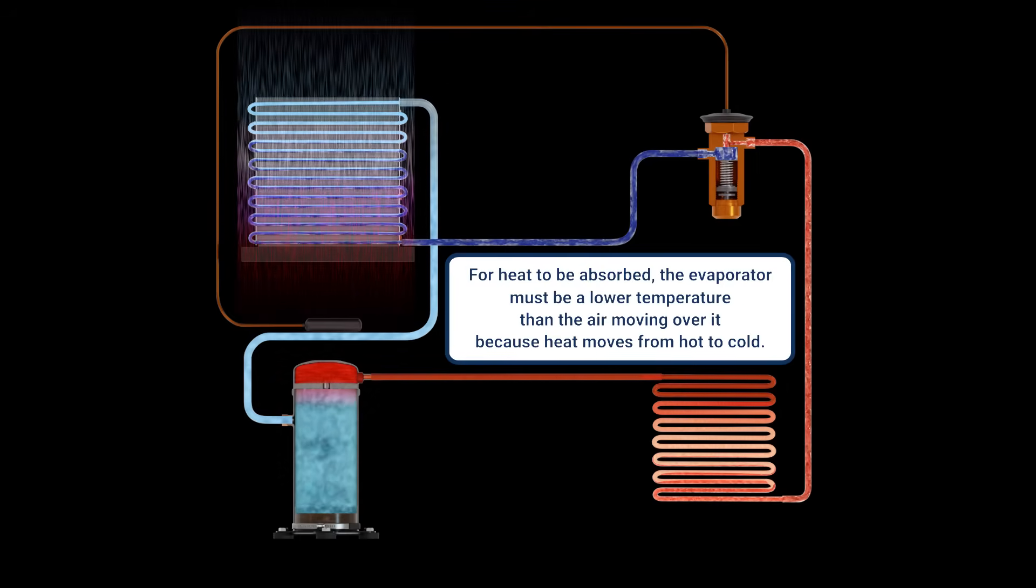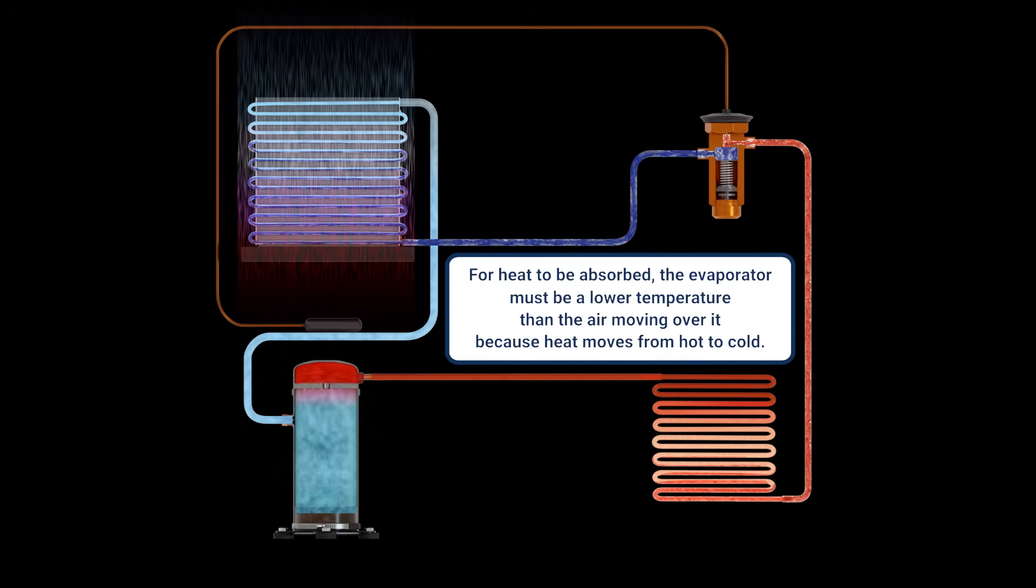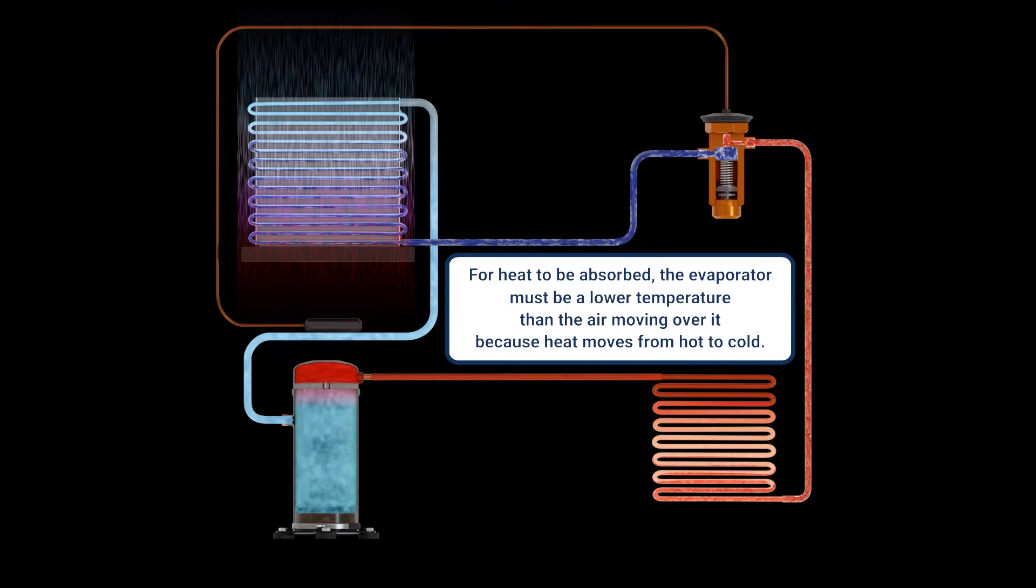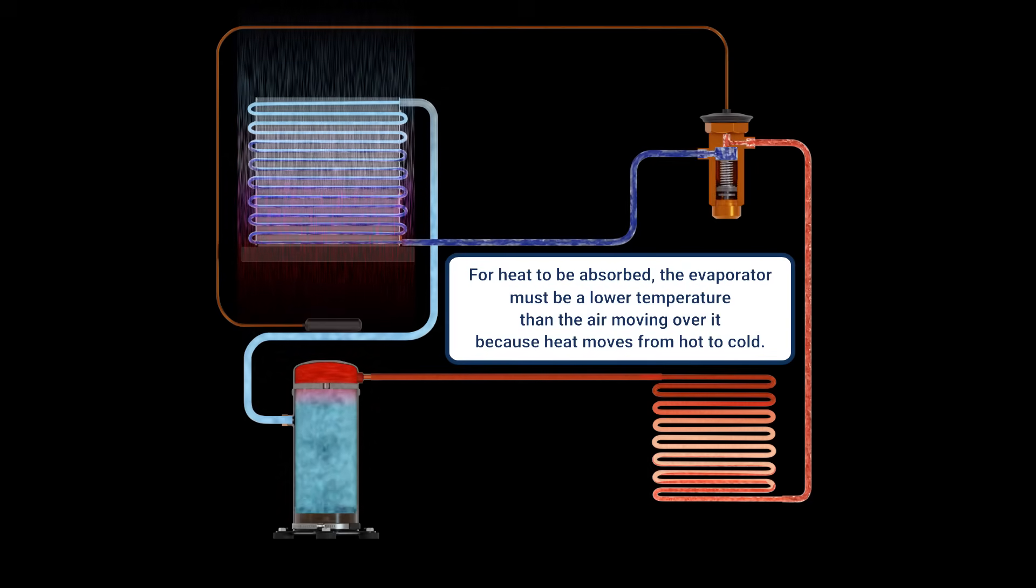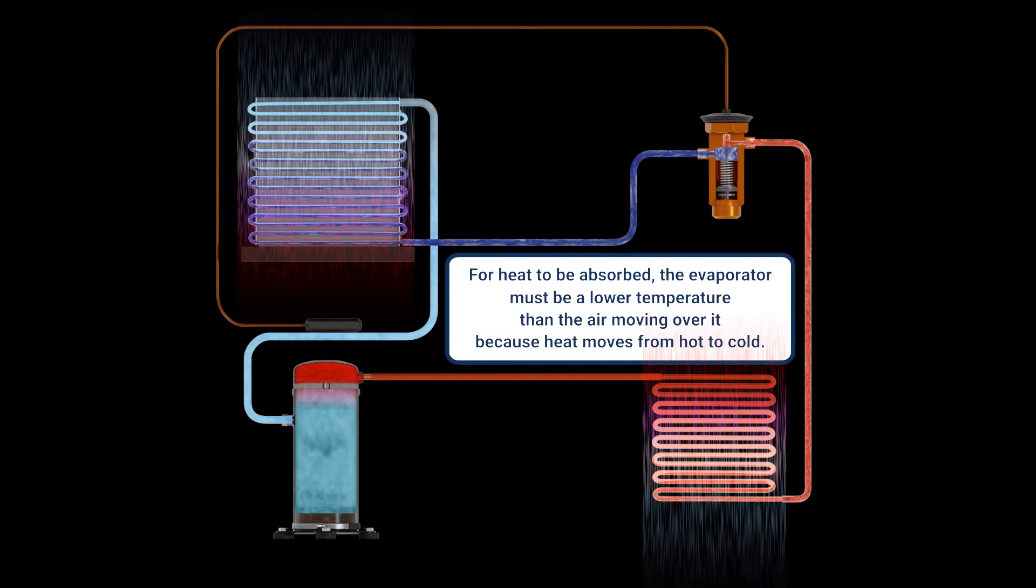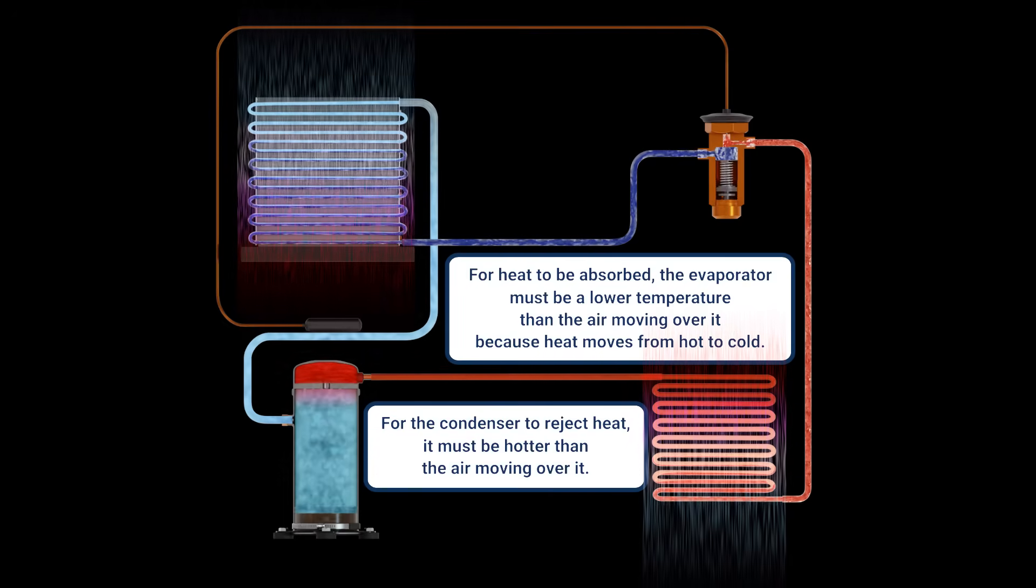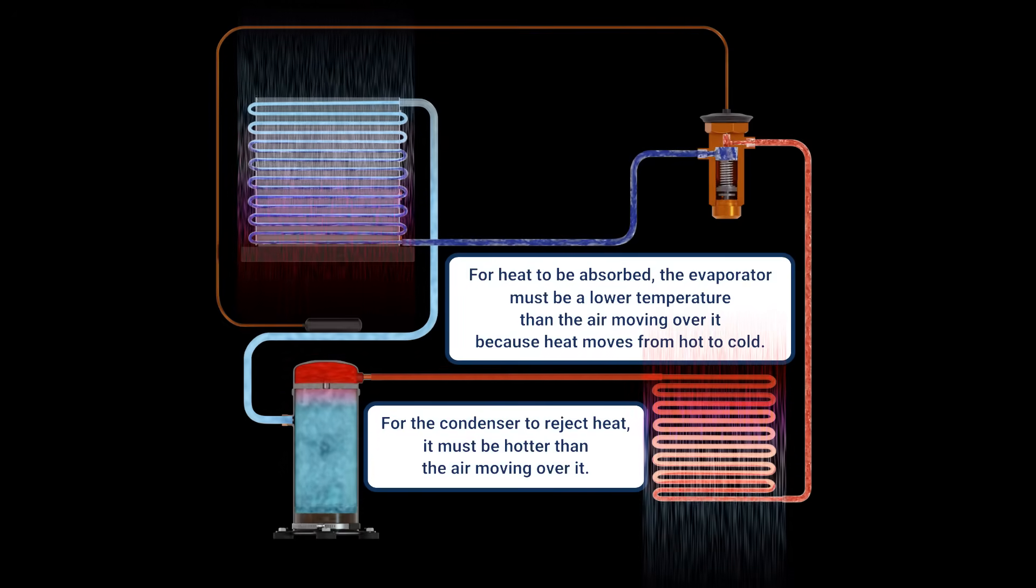Remember, for heat to be absorbed, the evaporator must be a lower temperature than the air moving over it, because heat moves from hot to cold. For the condenser to reject heat, it must be hotter than the air moving over it.